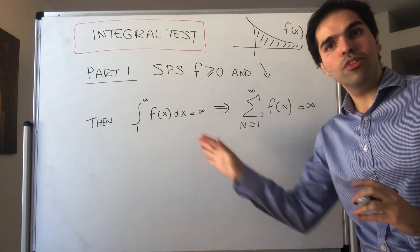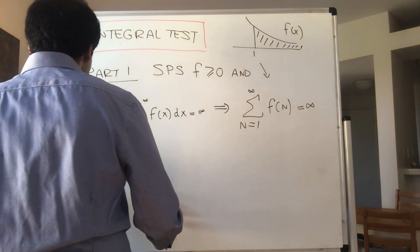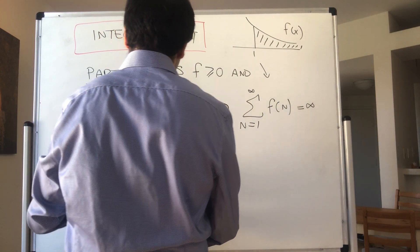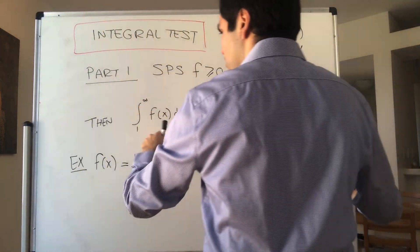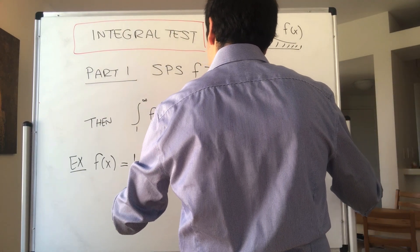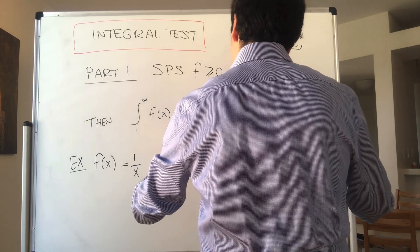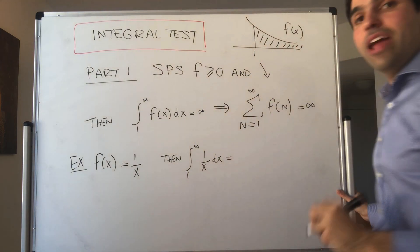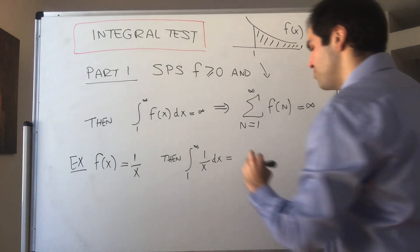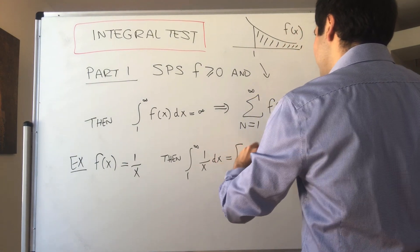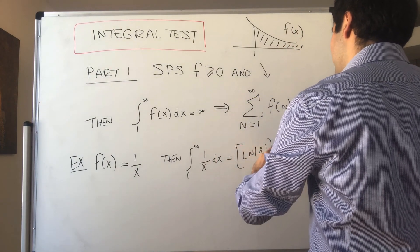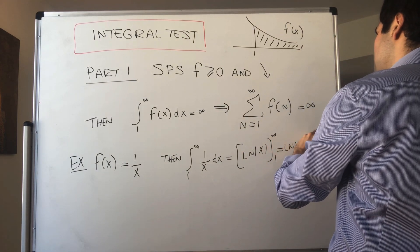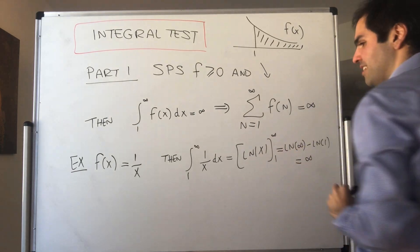Let me do an example to illustrate what I mean. Consider the function f of x equals 1 over x. Let's calculate the integral. The integral from 1 to infinity of 1 over x dx — we haven't really done improper integrals yet so let's be a bit hand-wavy. An antiderivative is ln of absolute value of x from 1 to infinity, and that gives you ln of infinity minus ln of 1, and that's infinite.